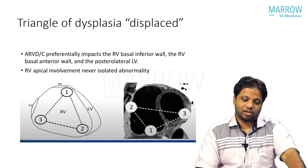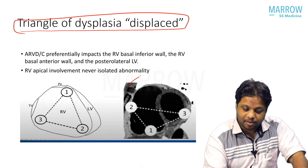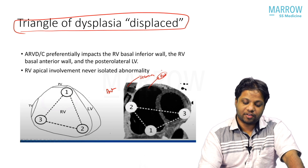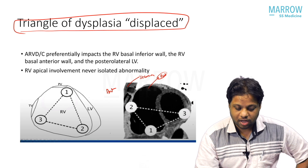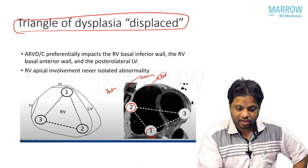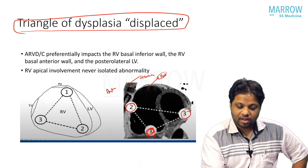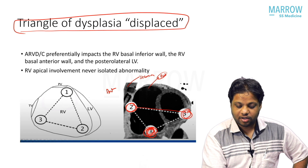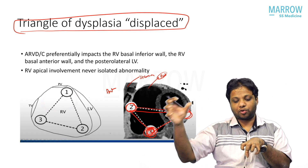Subsequently, this was proved wrong. Now there is a modern triangle of dysplasia. Looking at a basal cut of the heart — you have the apex, mid, and basal levels. The modern triangle is defined by the junction of the basal anterior RV, basal inferior RV, and posterolateral LV. This is the new triangle of dysplasia.